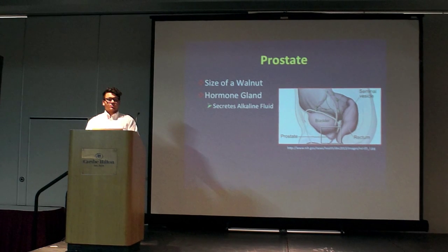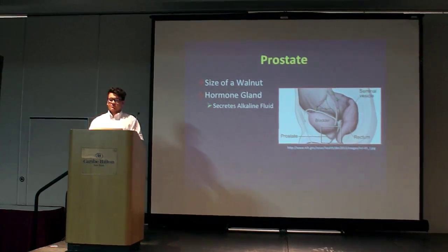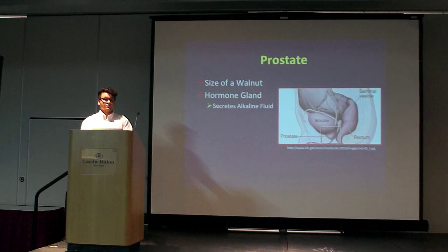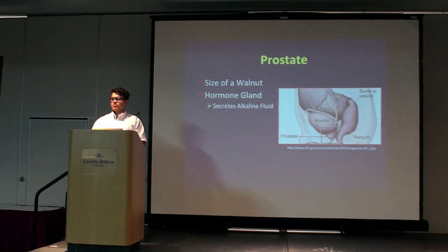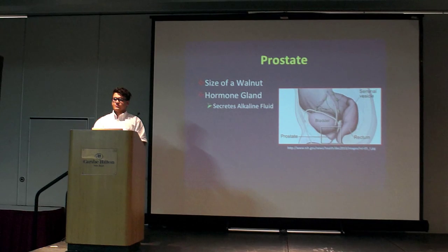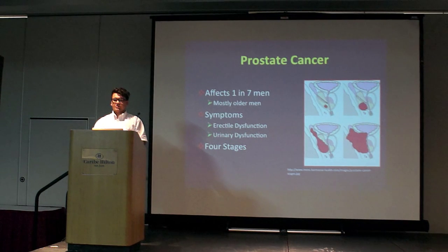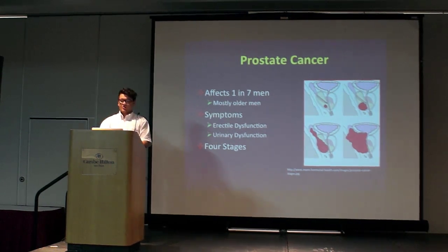The prostate is an important organ to the male reproductive system. It is about the size of a walnut and is located between the bladder and the rectum. It's a hormone gland that secretes alkaline fluid, which then becomes part of semen, which is used to neutralize the vaginal tract in order to prolong sperm life and increase motility. Thus, a disease like prostate cancer that affects one in seven men, mostly of older age, can be devastating to the reproductive system. Some of its symptoms include erectile dysfunction and urinary dysfunction.